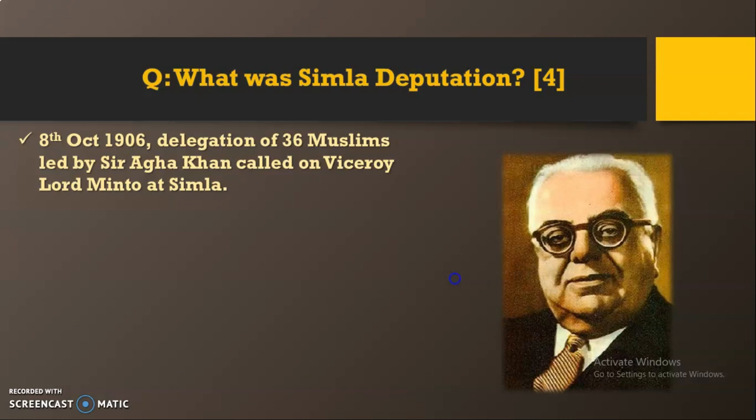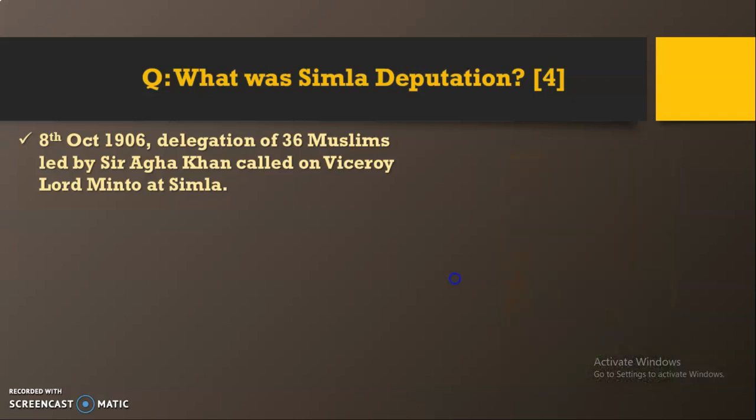The Viceroy at that time was Lord Minto, who had taken over from Lord Curzon in 1905. The Muslims, convinced that they could expect no justice from the Hindus, decided to take their case to a higher level. On 8th October 1906, a deputation of prominent Muslim leaders led by Agha Khan met and visited the then Viceroy Lord Minto at Shimla.